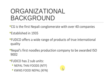Organizational background: CZ is the first Nepali conglomerate with over 40 companies, established in 1935. Foodco offers a wide range of products of true international quality. Nepal's first noodles production company to be awarded ISO 9002. Foodco has two sub-units: Nepal Thai Products (NTF) and Quicks Food Nepal (KFN).